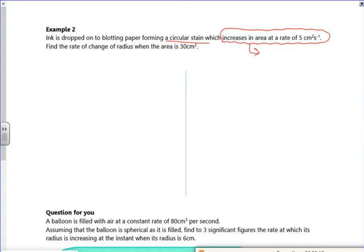So this is what you've got. Now it's area, you can tell by the units as well, it's area, so it's dA. But look at the units, so cm² is area, per second is time, so it's dt. That's 5 cm² per second.